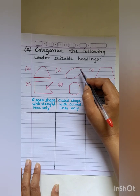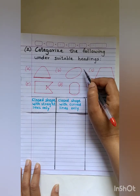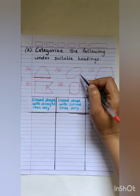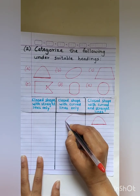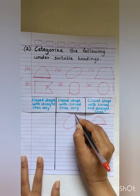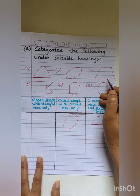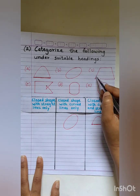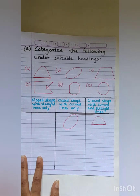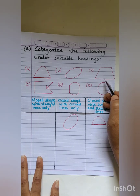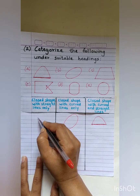Moving to the next figure — as we can see there is no straight line, so this is a shape with curved lines only. Now looking at the next figure: straight, straight, straight, straight — no curved lines. So this falls under the shape with straight lines only.